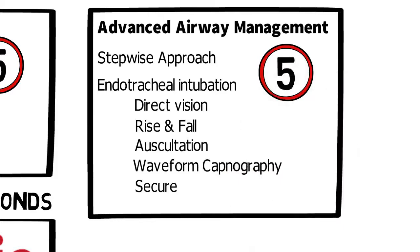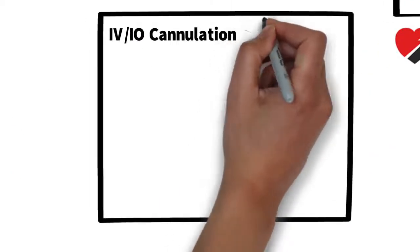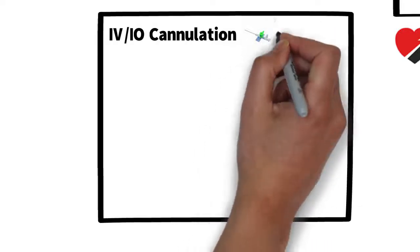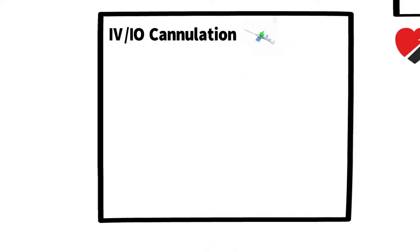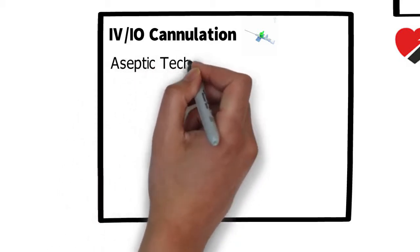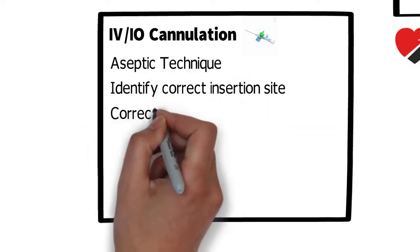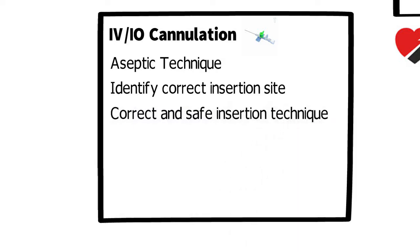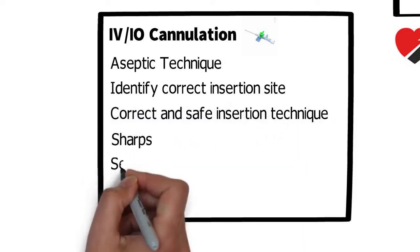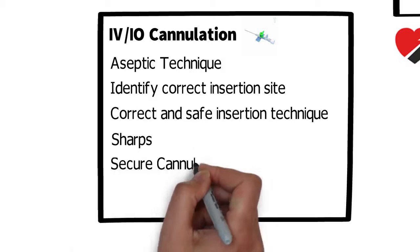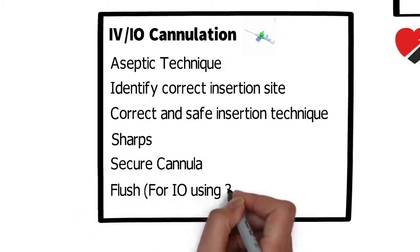For IV or IO cannulation, it's important to note that gaining rapid vascular access in children is often quickest using an intraosseous needle, and this should be used in preference to an IV cannula unless a suitable IV site is immediately apparent. Key things we're looking for include aseptic technique throughout, correct insertion site, safe insertion technique using the EZ-IO, sharps safety and disposal, securing the IO cannula, and a flush using a three-way tap.